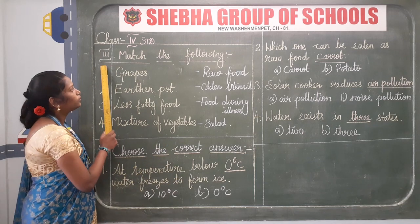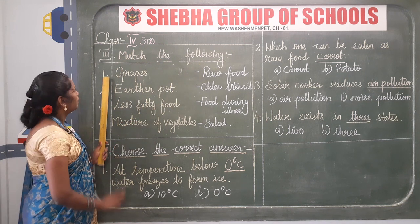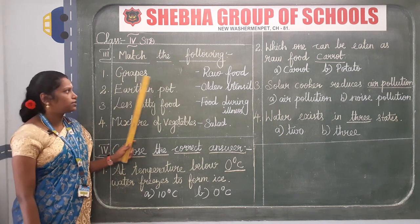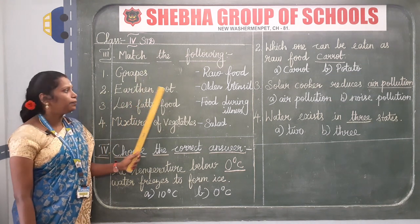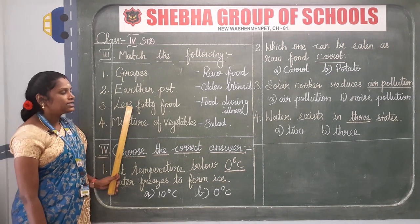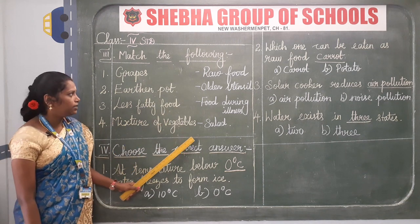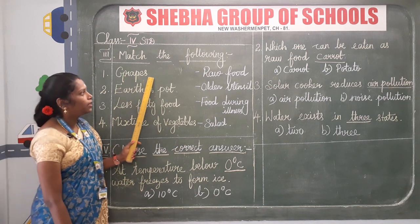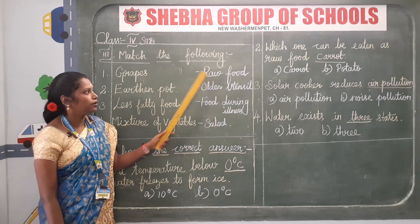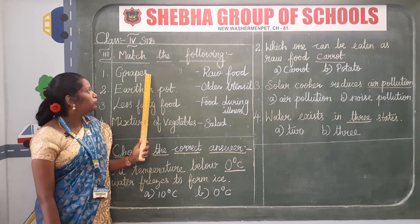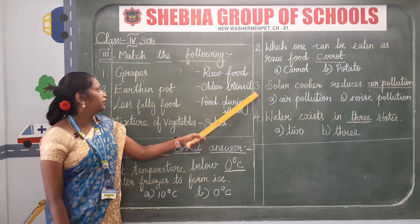Next, third Roman numeral letter: Match the Following. Number one: grapes — grapes are a fruit we eat as-is without cooking, so the answer is raw food. Number two: earthen pot — it is made of mud and used in olden times, so the answer is olden utensil.